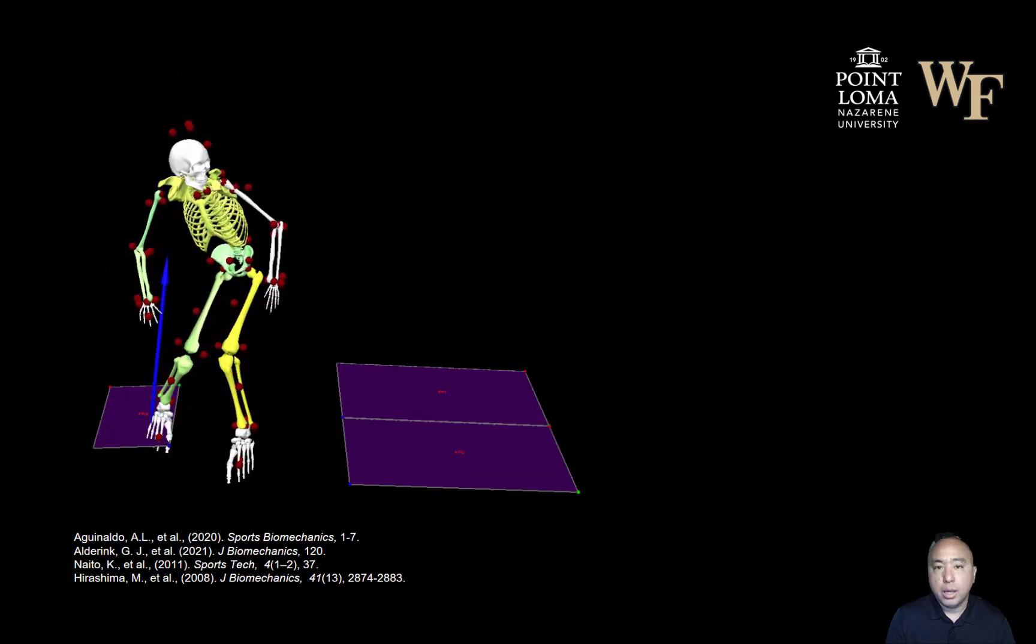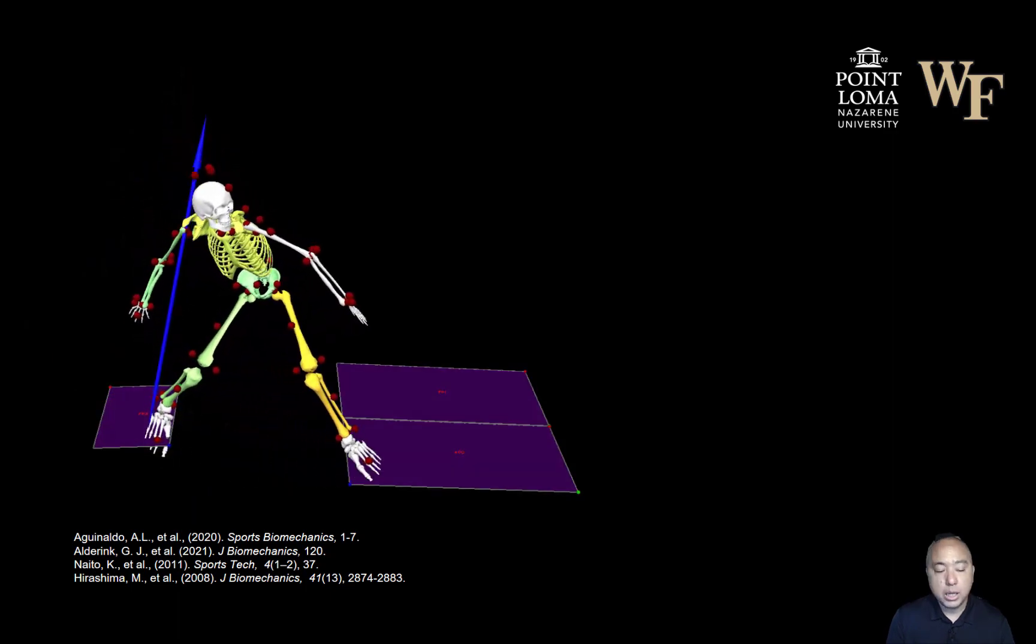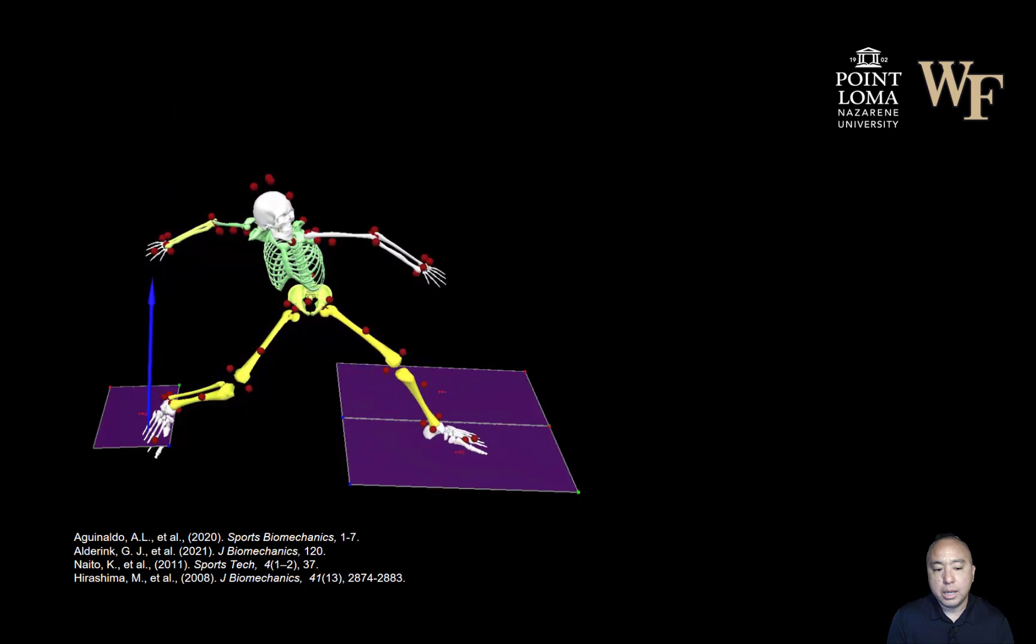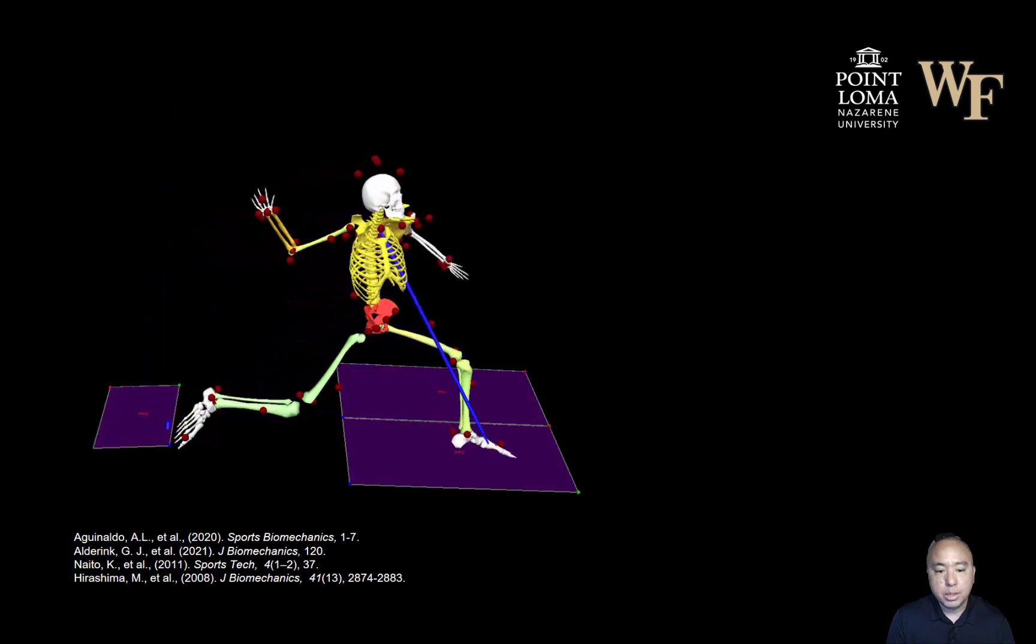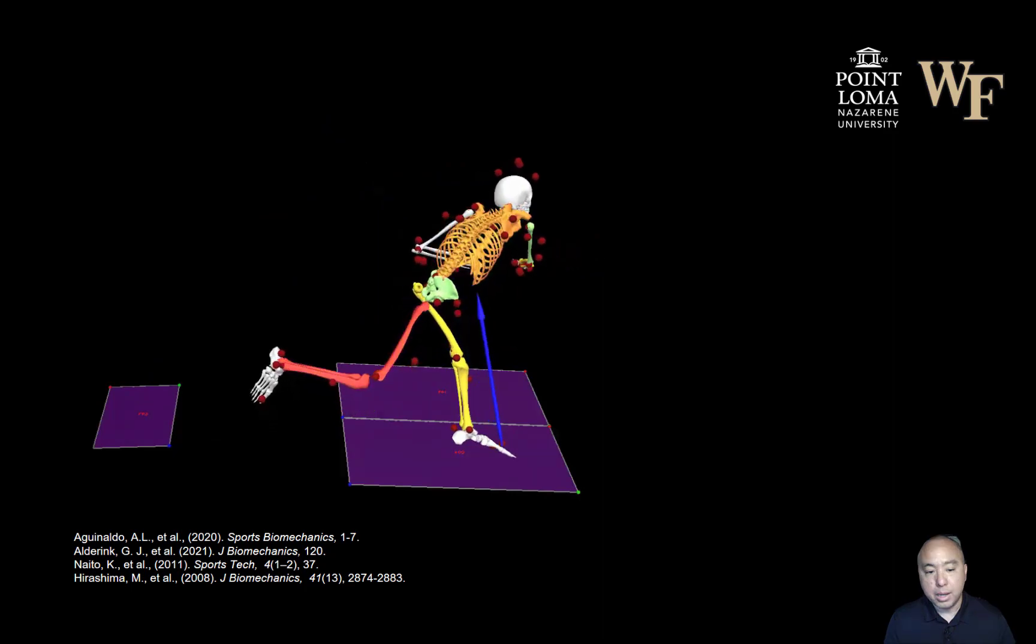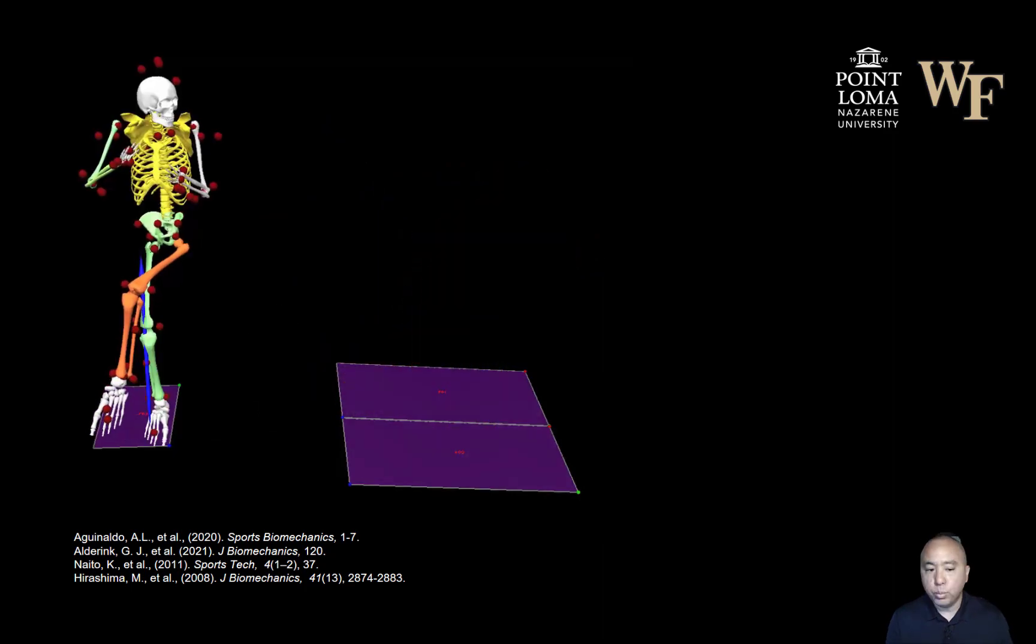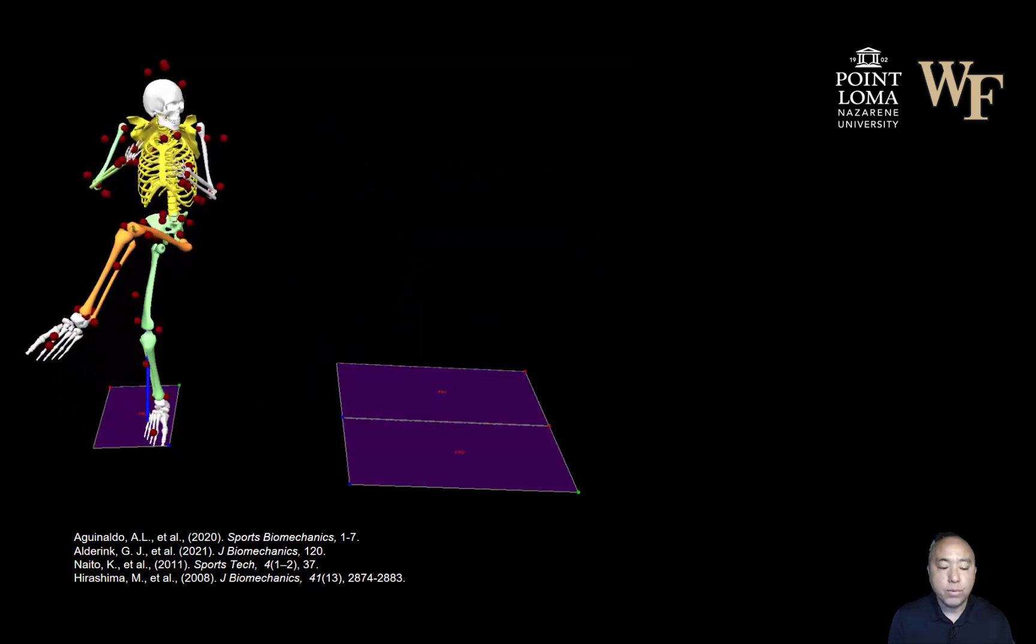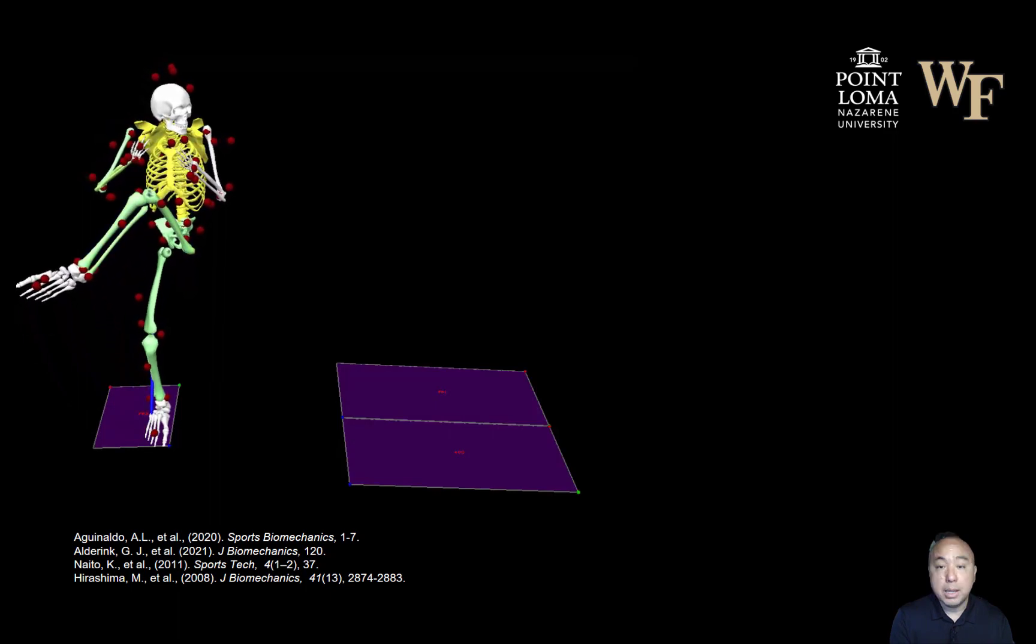We had full body kinematics and kinetics using a 12 camera motion capture system and an instrumented mound, which is called the perfect mound. It's a regulation pro mound with three AMTI force platforms embedded into the mound that allows us to measure ground reaction force.